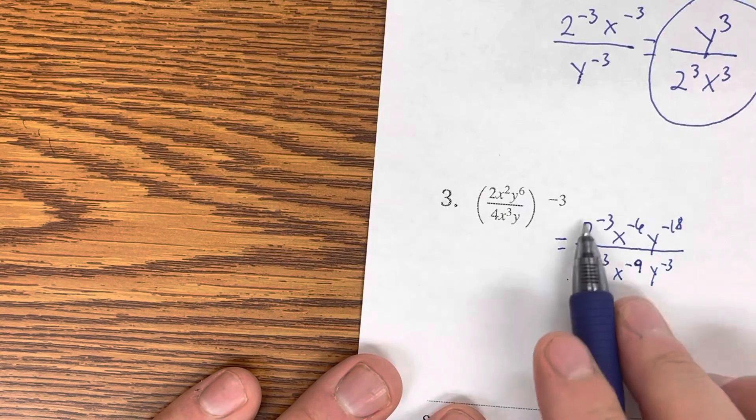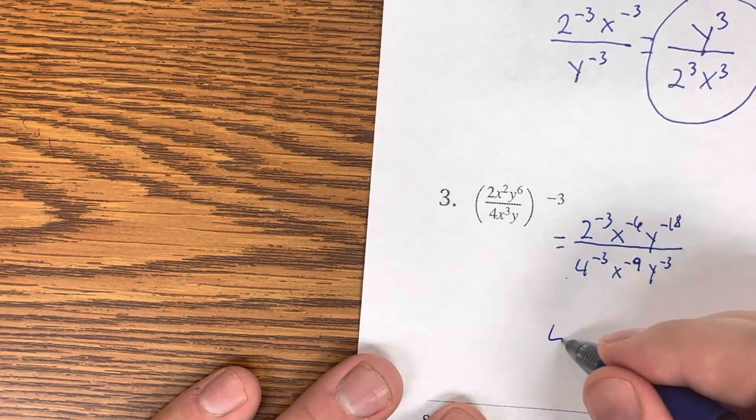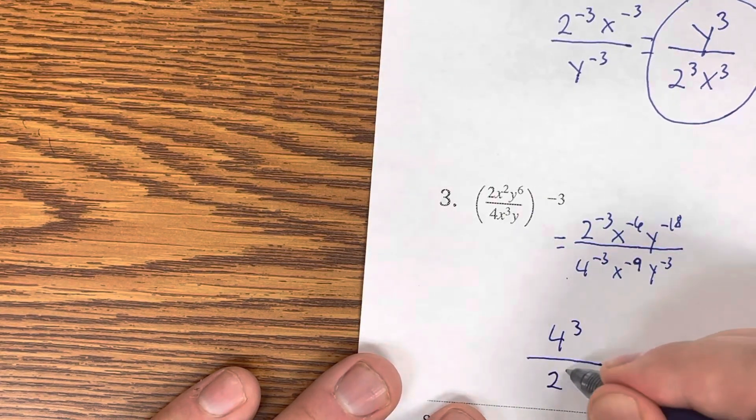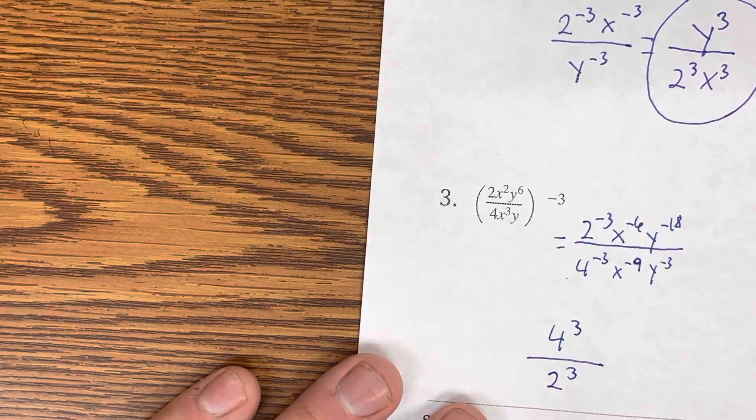Now, I can move my 2 and my 4 because those are different bases. So, 4 is coming up top, 2 is going down to the bottom. Have to move the negatives. Now, we got to subtract.